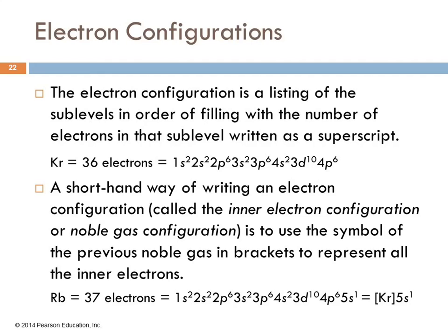We can make the shorthand even shorter. We can take the inner electron configuration, or I prefer to call it the noble gas configuration, and use the symbol of that noble gas to represent all of the inner electrons. So if we look at rubidium, on the periodic table, rubidium is element number 37. It's one past krypton. Krypton has 36. We just did all of this for krypton. Rubidium has 37. The first part of this is all the same. So instead of writing all of that out, we just write the symbol for krypton in brackets. The same as krypton, plus it's got one electron in the 5s orbital. Saves a lot of writing.